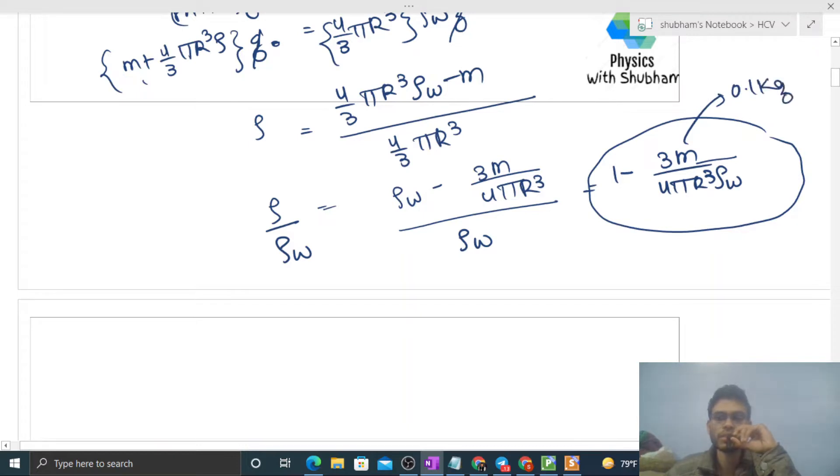Now you can calculate the numerical answer. Mass value is small m, that is given 0.1 kilogram. Pi is 3.14, radius will be 0.05 meter, 5 centimeter is given so you can convert it to SI unit, and density of water will be 1000 kilogram per meter cube. So I think you can calculate the answer.